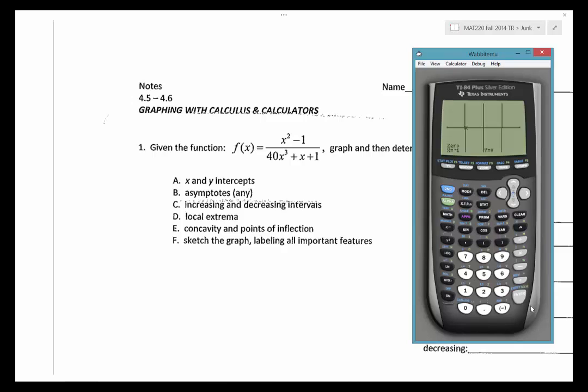So then, similarly, we would do the same thing for the other side. We would go second, calculate, go for a zero. Now, for my left bound, I can move my cursor. Notice the left side of this would be in the negative value. So I want my y values to be negatives. But what I'm watching for is I want them to start tending towards going up. There we go.